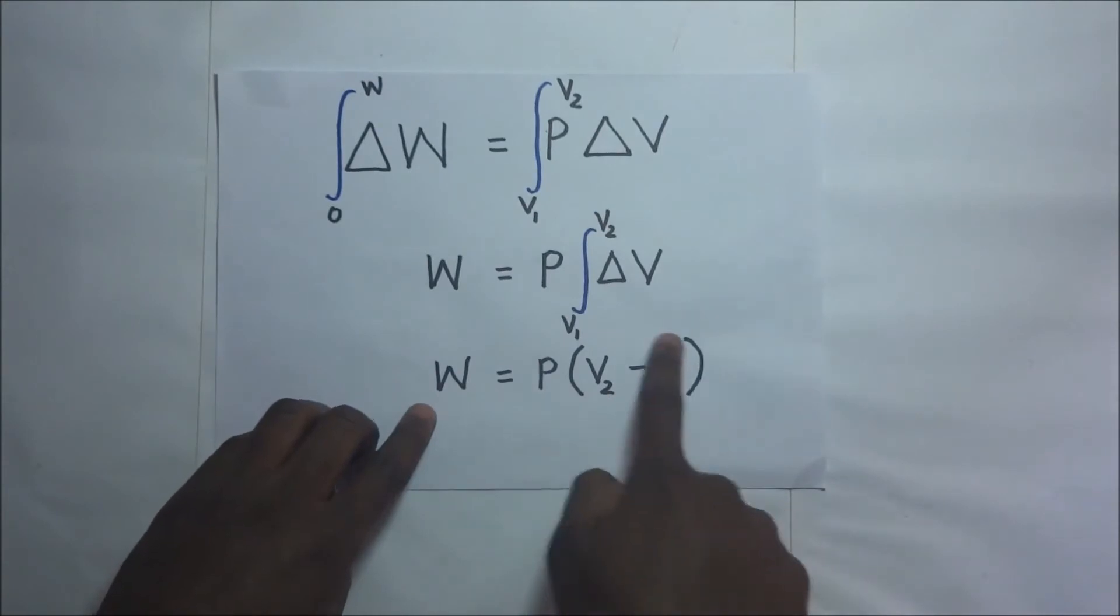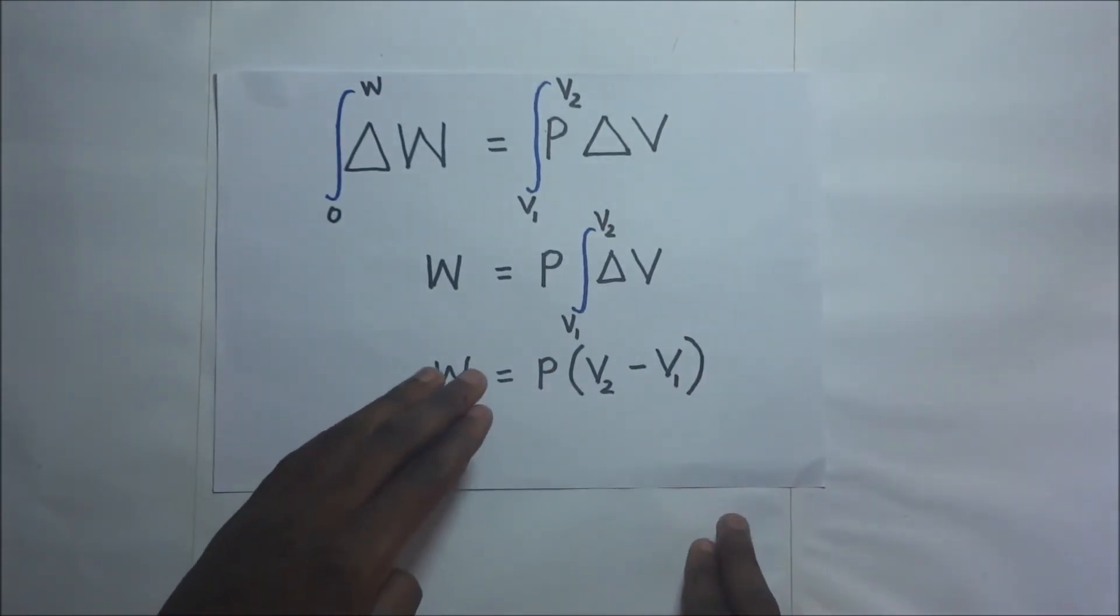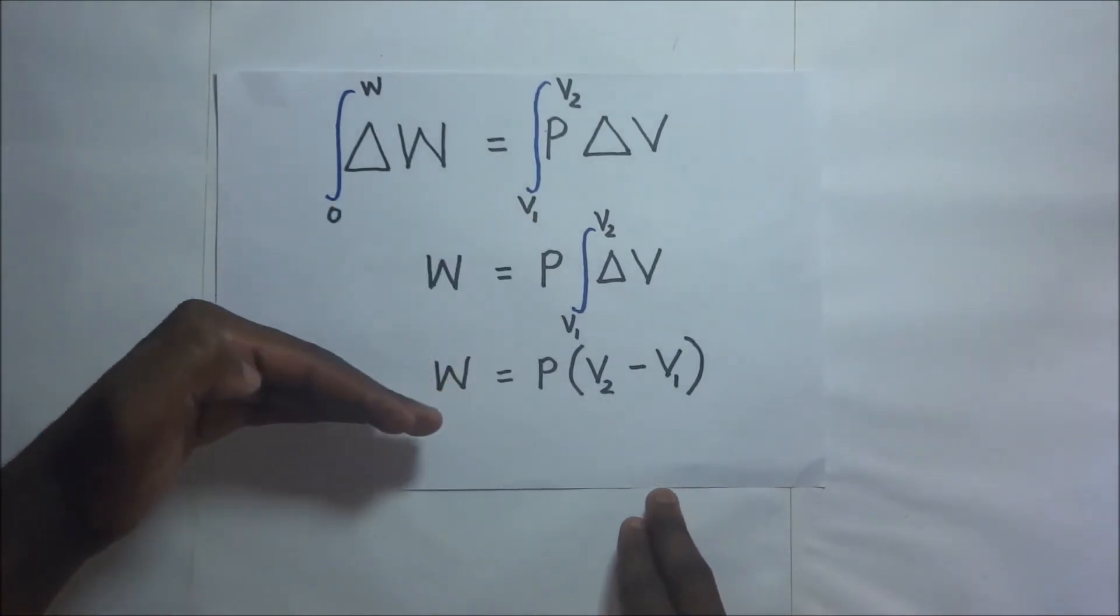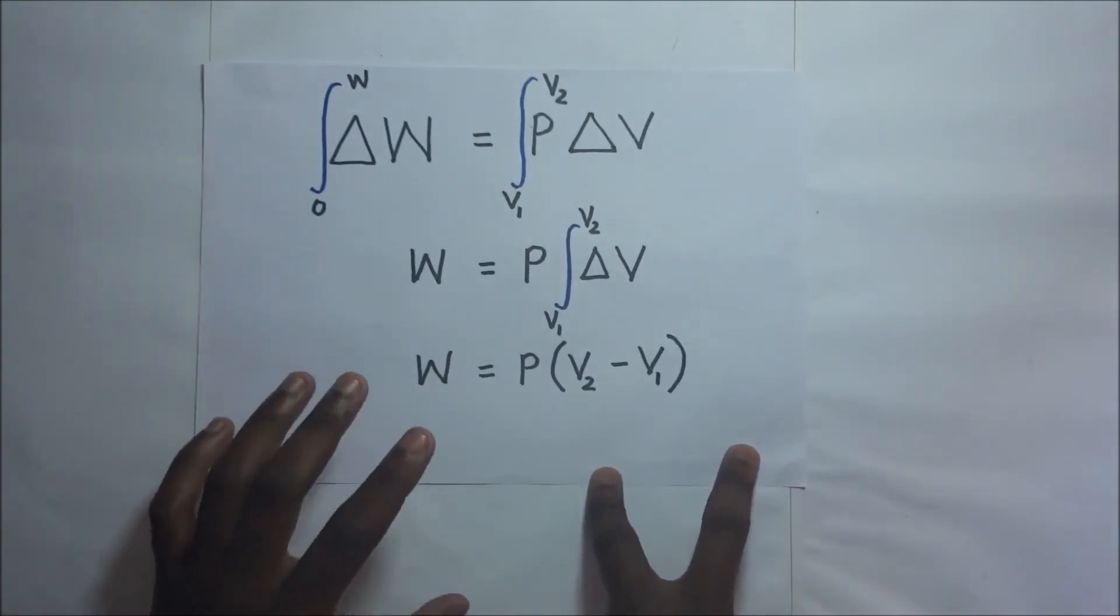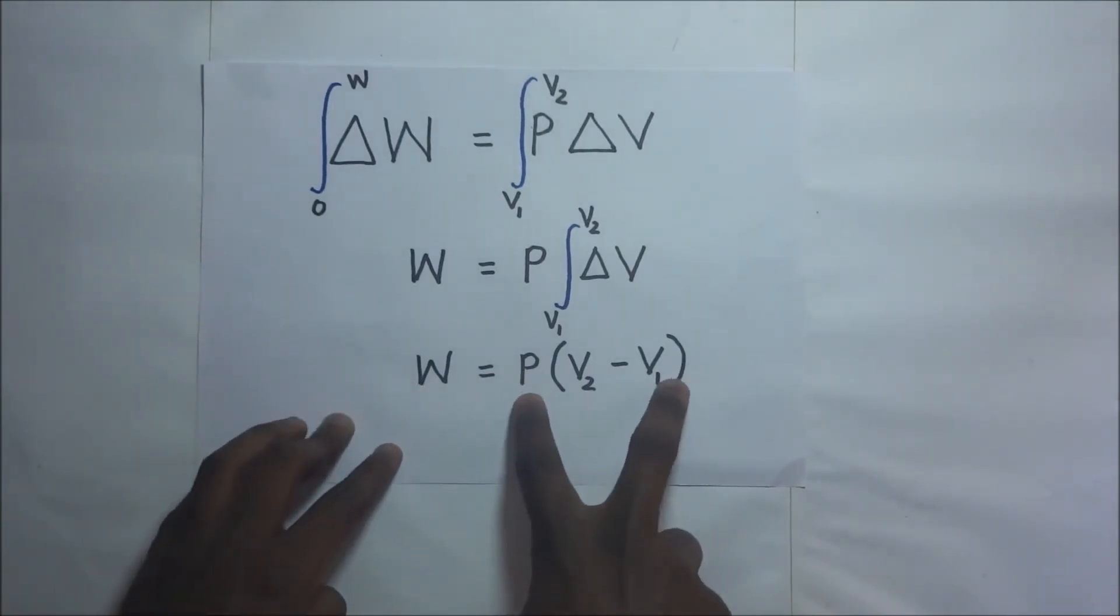So since it's a constant we put it out and we integrate from V1 to V2. When we integrate, the work done gives us this expression. Now this is an assumption that you know how to integrate—that is a full topic in calculus. So work done by a gas that is expanding or a gas that is doing work is given by this.